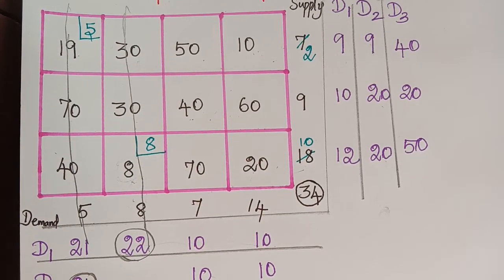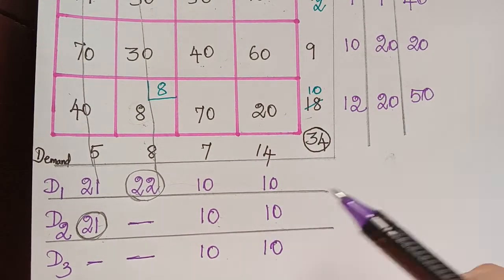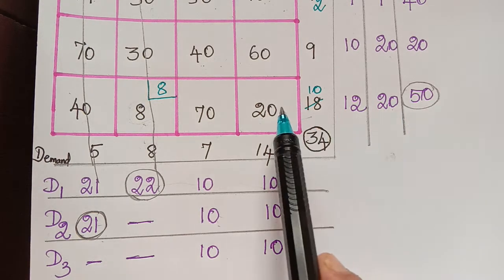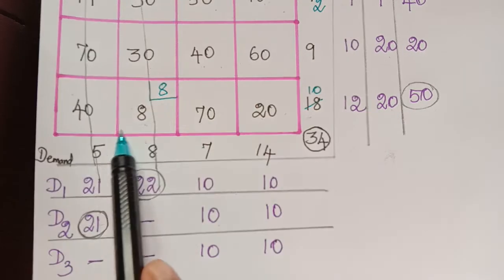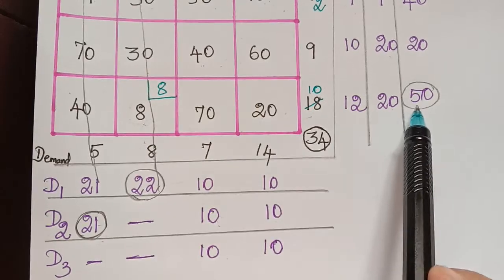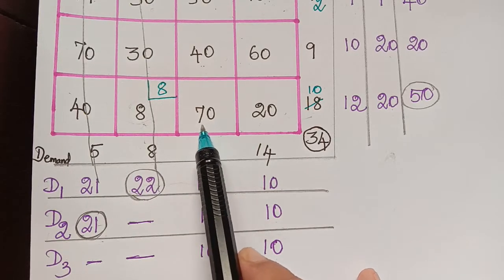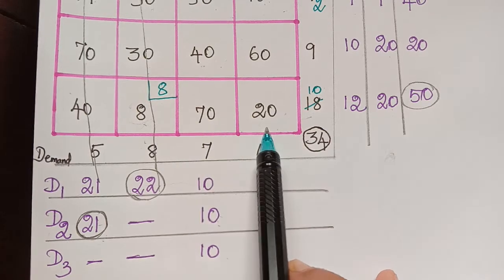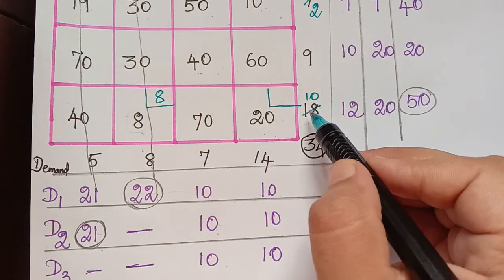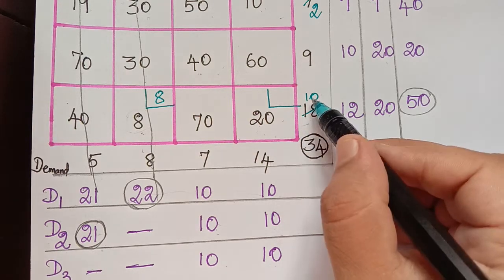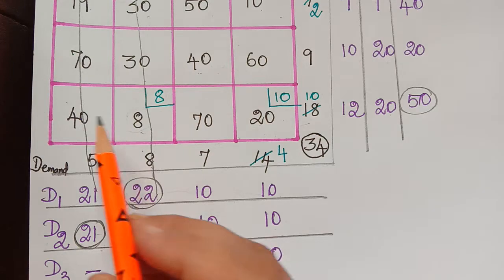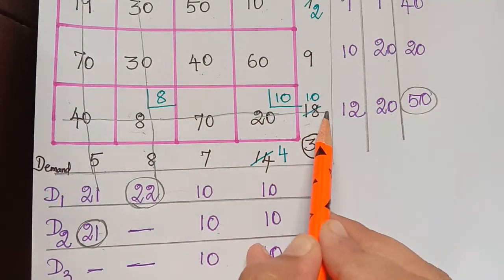The maximum D3 value is 50, corresponding to row 3. In row 3, the two remaining cells have values 40 and 20; the least is 20, so we allocate there. Supply is 10 and demand is 14, so supply is less — we allocate 10, subtract from 14 leaving 4, and strike off row 3.